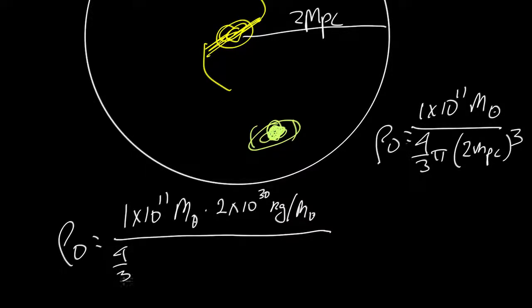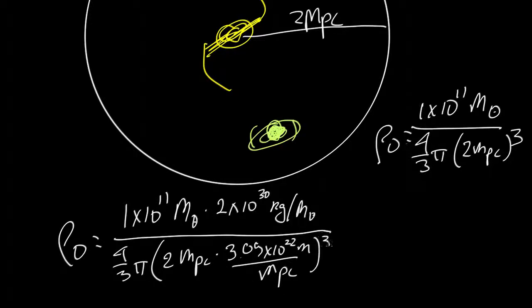The bottom part, we have 4 thirds pi, and we have 2 megaparsecs, and a megaparsec, there are 3.09 times 10 to the 22 meters per megaparsec. That whole thing is cubed.